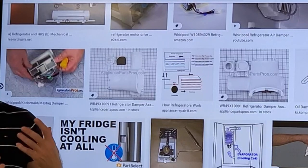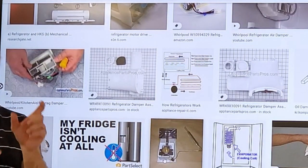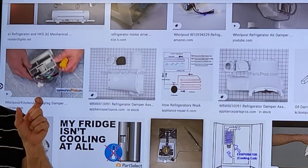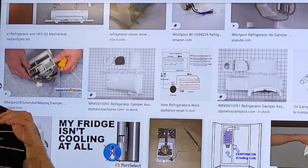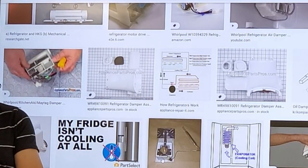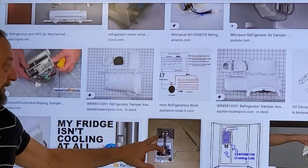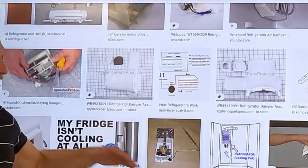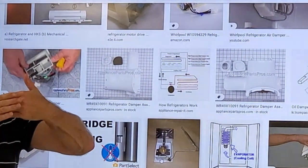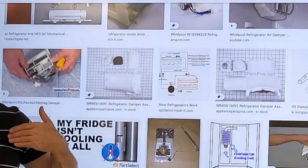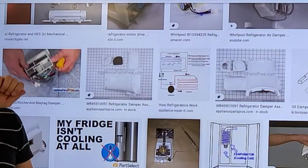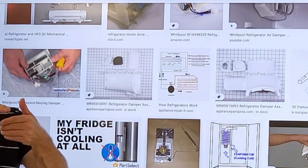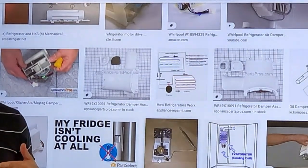Then they started using something similar to the thermostat in the refrigerator. The thermostat had a capillary tube filled with a gas or an oil. Once it reached a temperature, that fluid cycled a switch open and closed. They did the same thing with the damper. They had a capillary tube here, and if it got too cold, the gas would mechanically push the damper closed, restricting the airflow into the refrigerator side. You can adjust it warmer or colder, but the damper would move based on a fluid or gas to control the airflow into the refrigerator section.